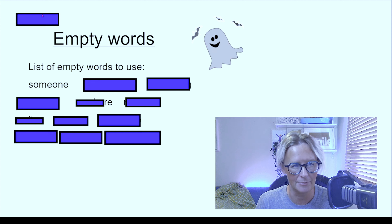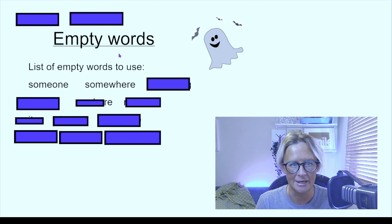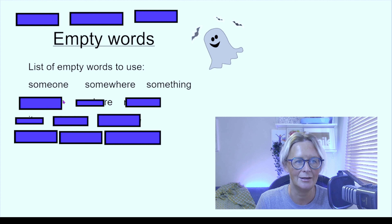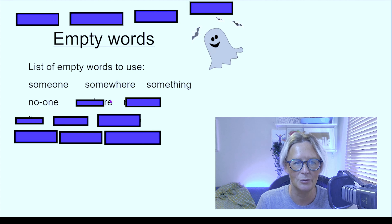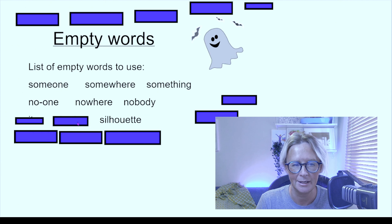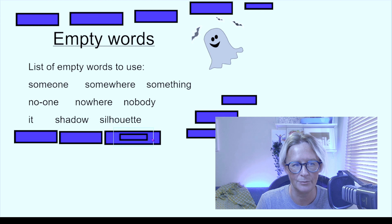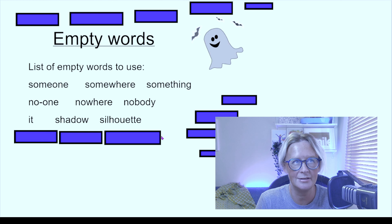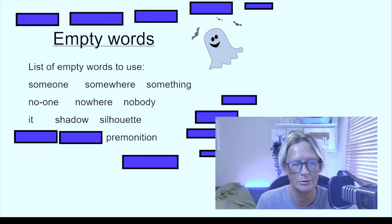Let's have a look at some of them now. There was somebody... somewhere... somewhere outside, something was lurking. 'No one' is another one. Nowhere, nobody. A silhouette, a shadow. 'It.' We've got this kind of question mark over what this could be — we don't know. The author is releasing this information slowly to you, and it's a great technique to use.